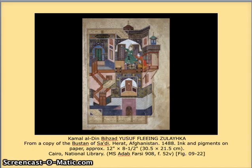Another thing we see in the early books is what is sometimes known as Persian miniature painting — small paintings commissioned by wealthy patrons and included in the book. They're very specific, very detailed, and it took a lot of training and expertise to create these Persian miniature paintings.